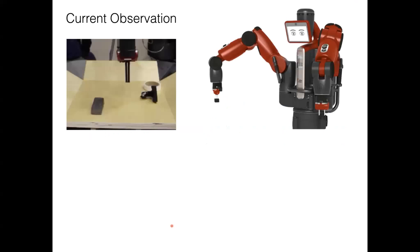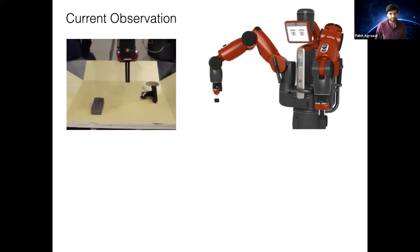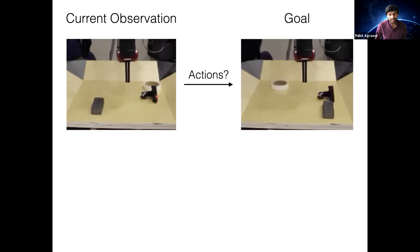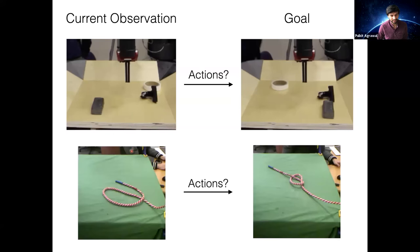Let's consider a setup: I have a robotic system with a current observation as an image. I have objects on a table that I want to rearrange into a different configuration shown by a goal image. Similarly, I might have a different task where I start with a rope in a particular configuration and want to tie a knot.